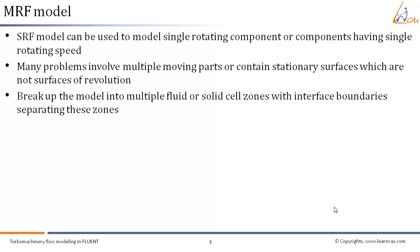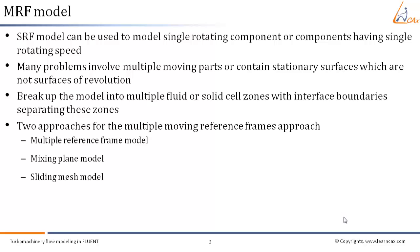Zones which contain the moving parts or components can be solved using the moving reference frame equations, and those which have stationary parts can be solved with the stationary frame equations. The manner in which Fluent treats the equilibrium at the interface leads to two approaches for the multiple moving reference frame modeling method. The first is the multiple reference frame model and the other is the mixing plane model. There is also another approach called the sliding mesh model. Both the MRF and the mixing plane model are steady-state approximations and differ only in the way the interface is treated.